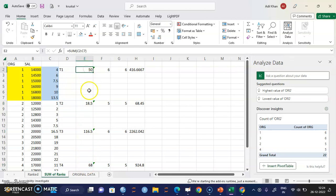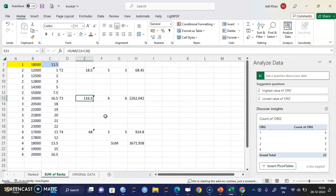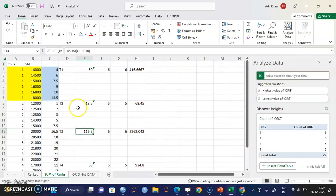So for group one, it is 50. Group two, it is 18.5. Group three, it is 116.5. And group four, it is 68.